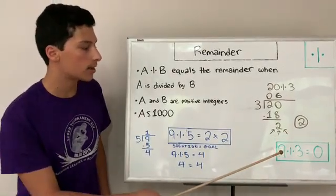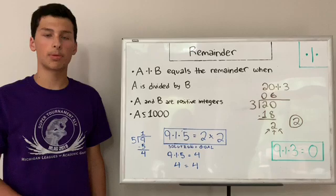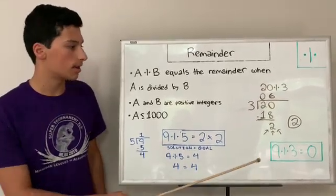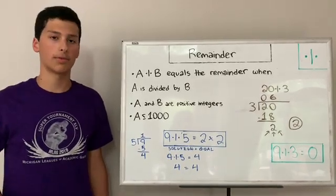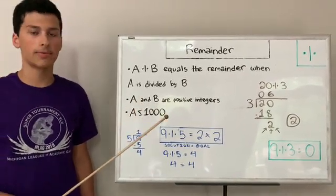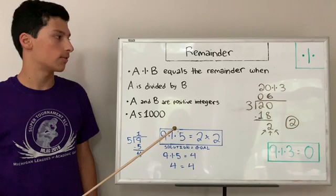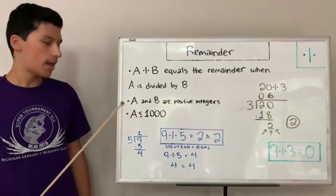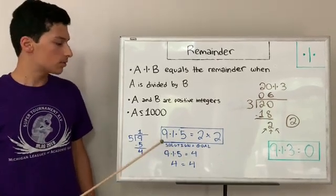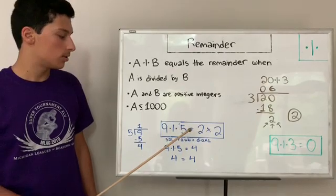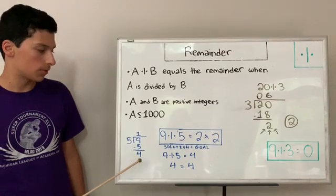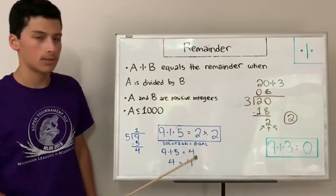If you did 9 remainder 3, which fits perfectly, 3 times 3 equals 9, that 3 fits perfectly, then the remainder would just be 0 because there's no number that's left over. If you look, a couple of restrictions, firstly, A and B have to be positive integers. You can't have any negative numbers. Additionally, A has to be less than or equal to 1,000. If you look at this solution here, it's 9 remainder 5 equals 2 times 2. If you look here, we can do the division problem and see that there's a remainder of 4 left over. So 4 equals 2 times 2, which is also 4.